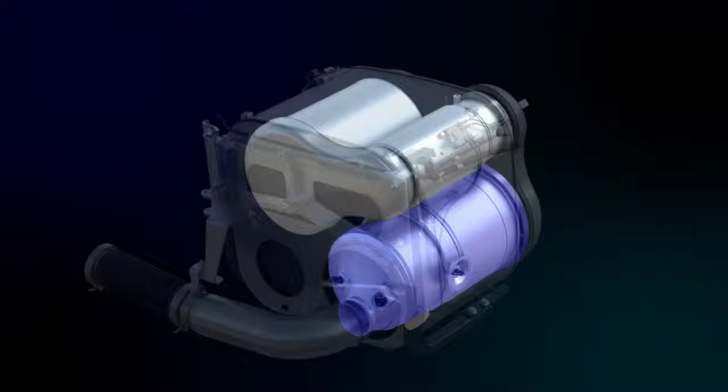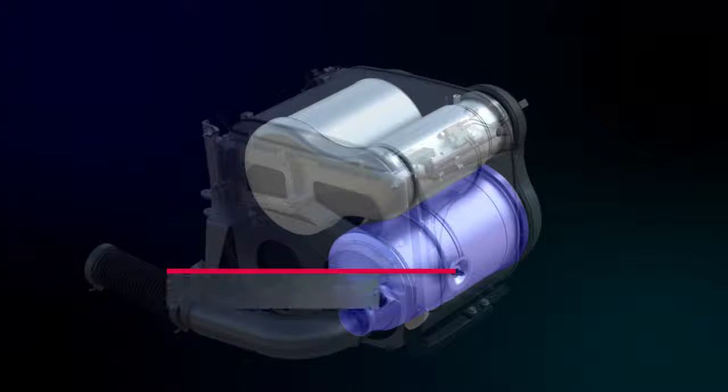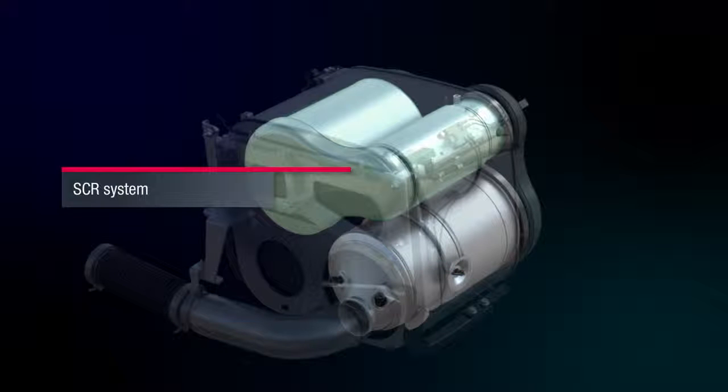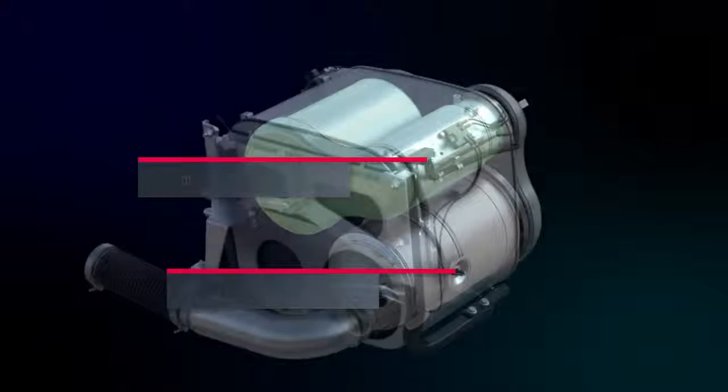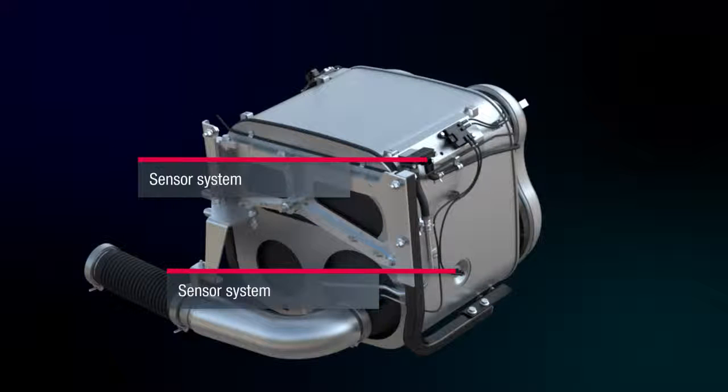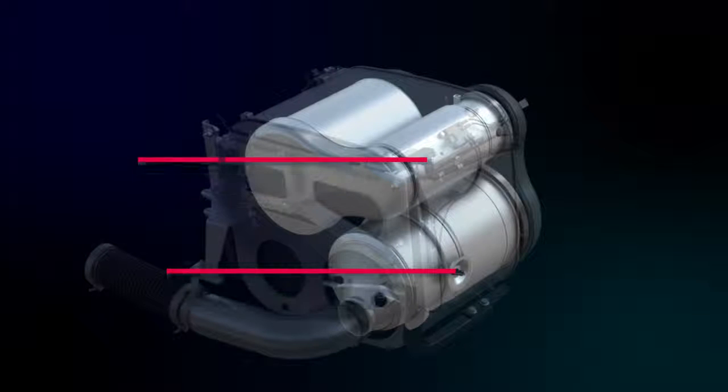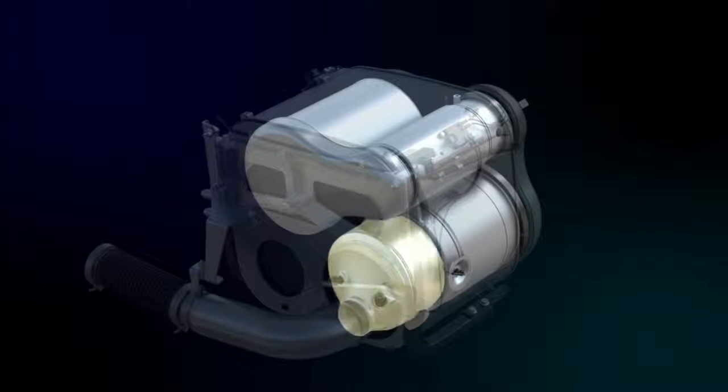The exhaust gas after-treatment is compactly arranged in the exhaust silencer and is carried out in two stages. The first stage is performed through the CRT system and the second by the SCR system. An integrated sensor system ensures continuous monitoring of all system-relevant functions. The exhaust gases are first fed through the Oxidising Catalytic Converter and then into the Diesel Particulate Filter.